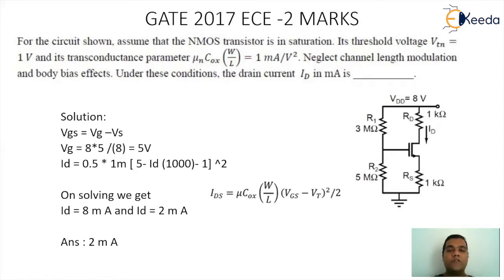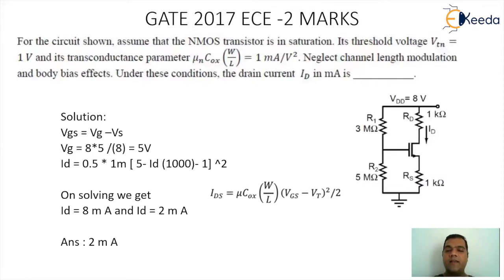The value of VG, which is the Thevenin's equivalent voltage, is 5V. So VGS = 5V − ID × RS, where RS = 1kΩ. We use the saturation equation: ID = μn·Cox·(W/L) × (VGS − VT)² / 2.